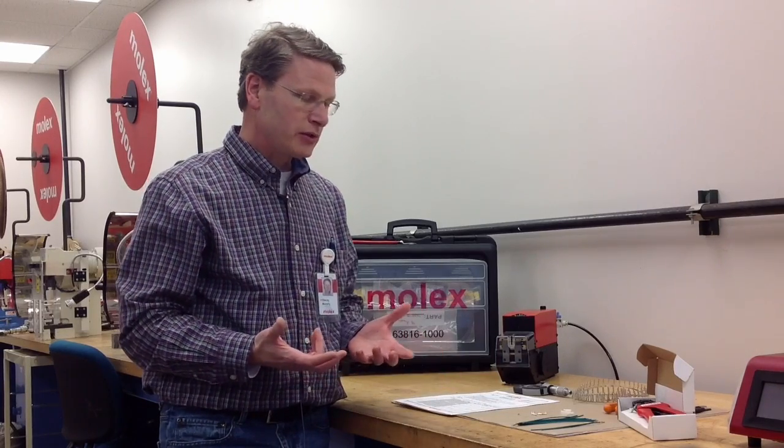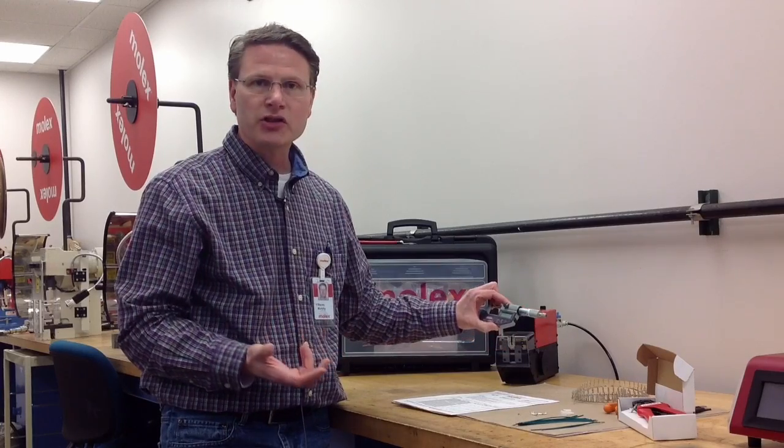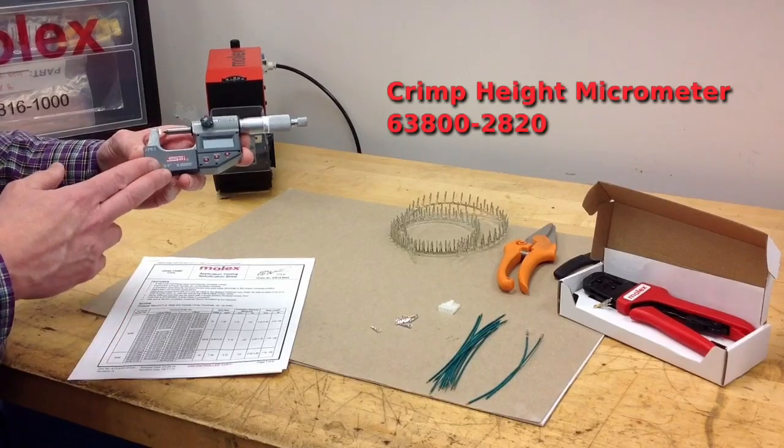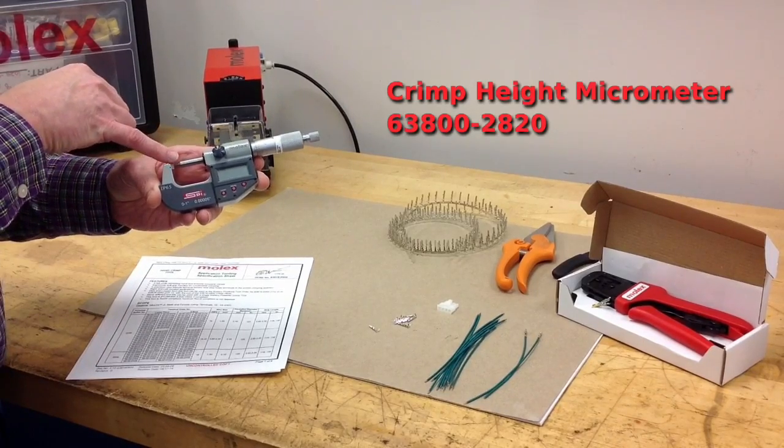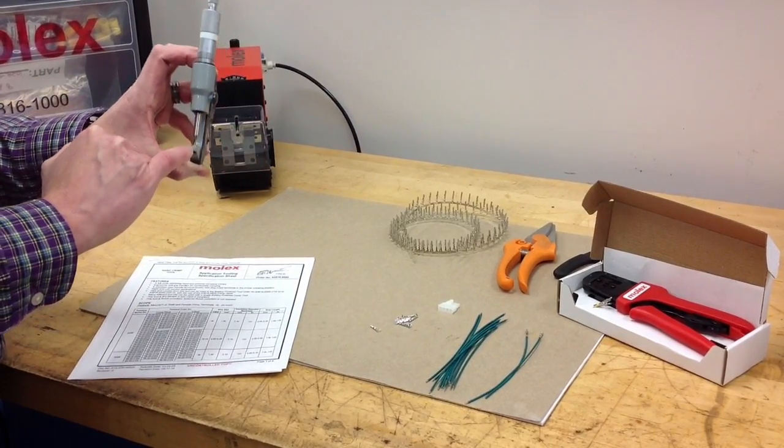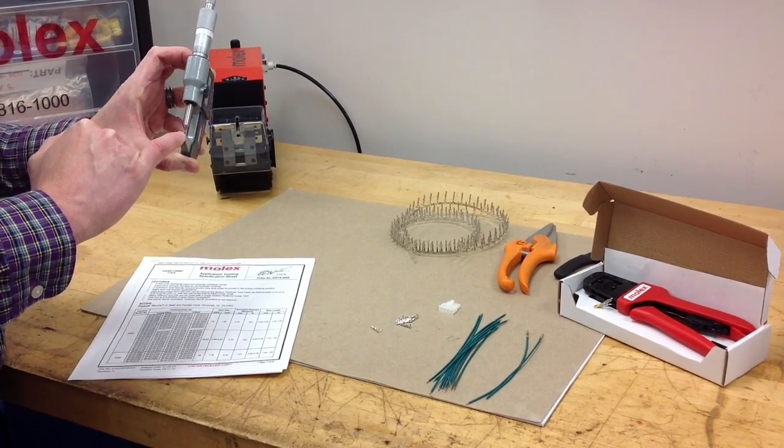Another area to look at in making a quality crimp is make sure you have a crimp micrometer to check the crimp height with. Here's an example of a crimp micrometer. It has a point on the barrel and the anvil has a flat blade here, and those are specific to a crimp micrometer.